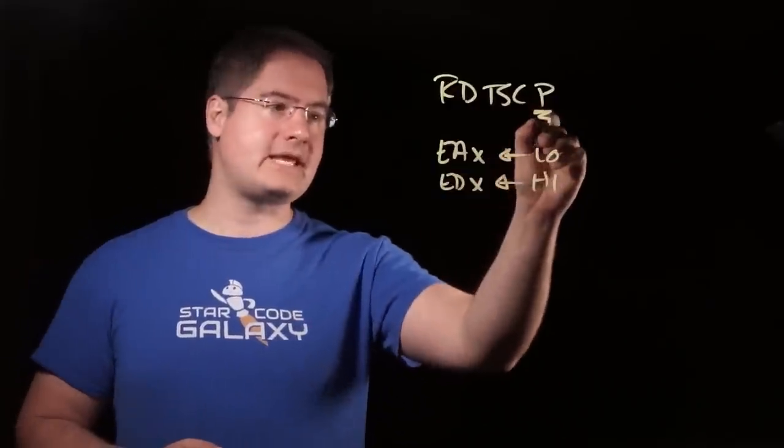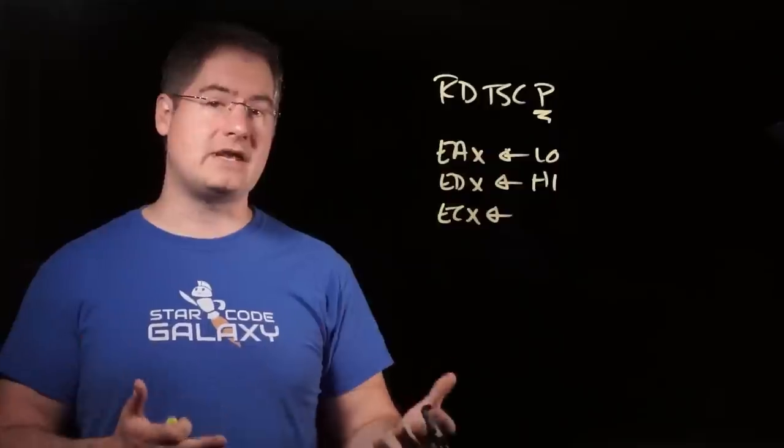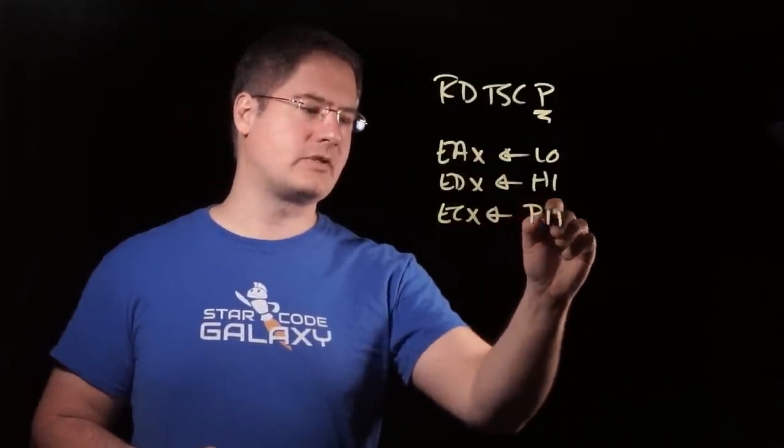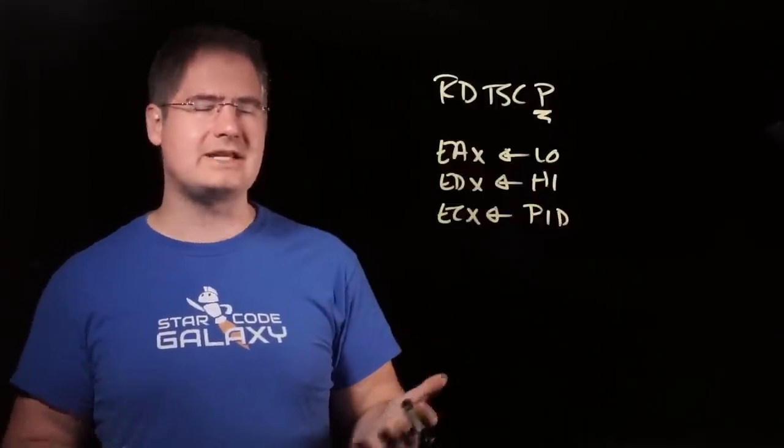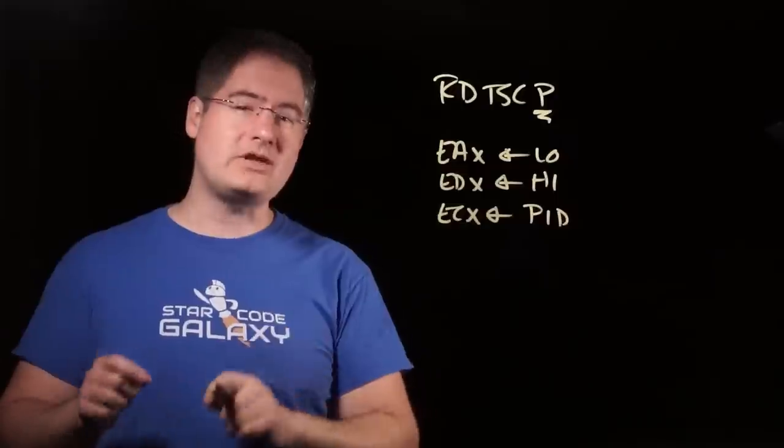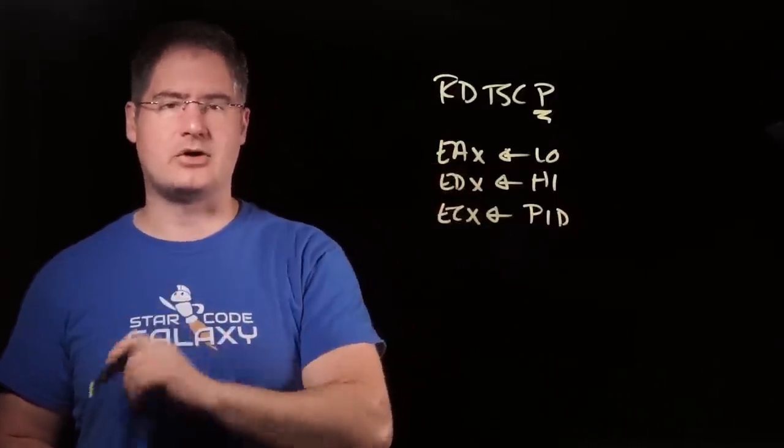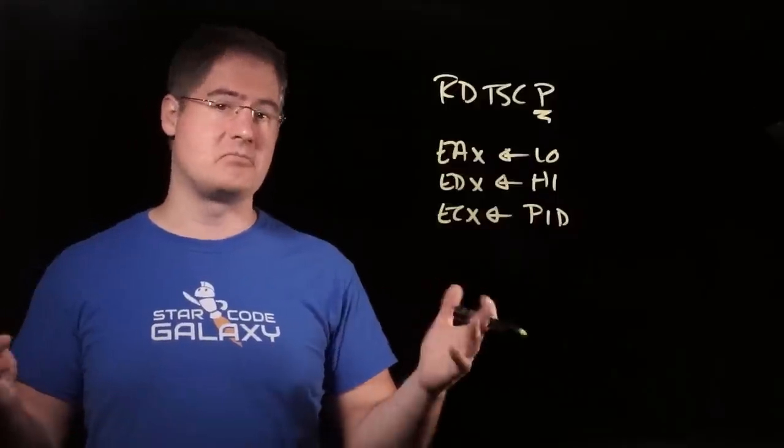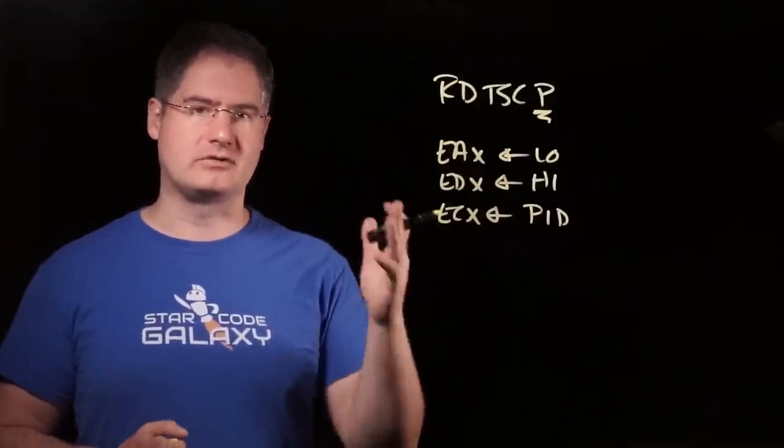However, the P part actually refers to another thing it's going to do. Into the ECX register, it's going to put something called the PID, or processor ID, processor core ID, might be a better way to think about it. And what it does is it says which of the cores in the CPU was actually running this particular RDTSCP, meaning what core was the thread assigned to when it actually executed this instruction.